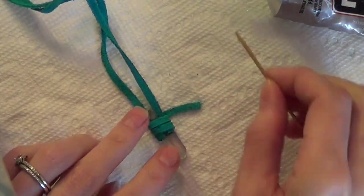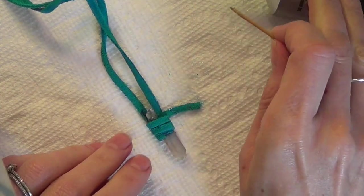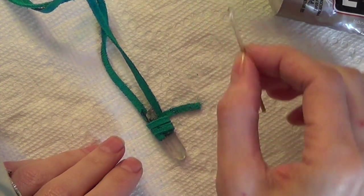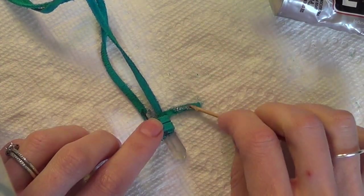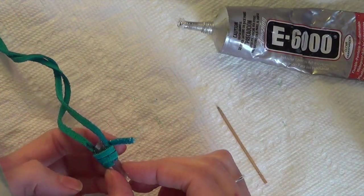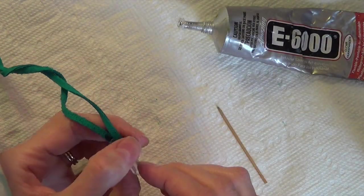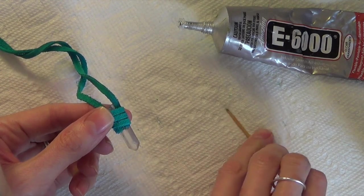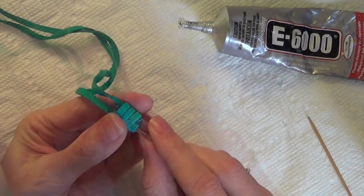Once you've wrapped around as many times as you like and figured out where your end is going to be, make sure you end on the back again. Then you can add a little bit more adhesive to the end of the leather and stick that down. This is a really pretty, easy, cute, and quick necklace.